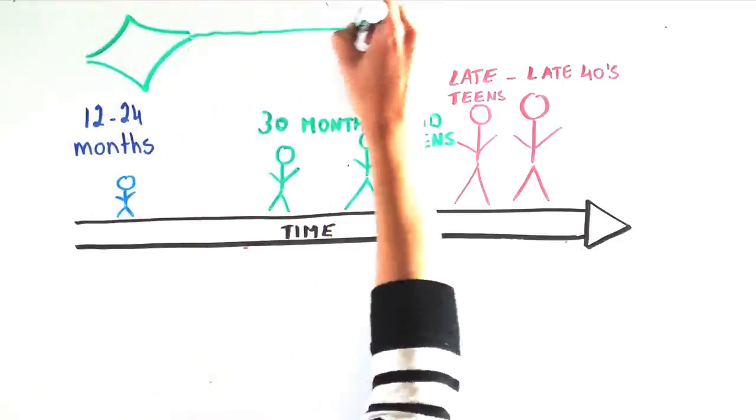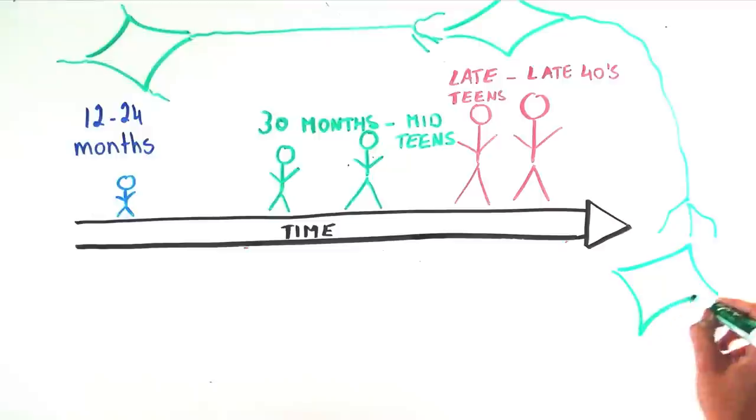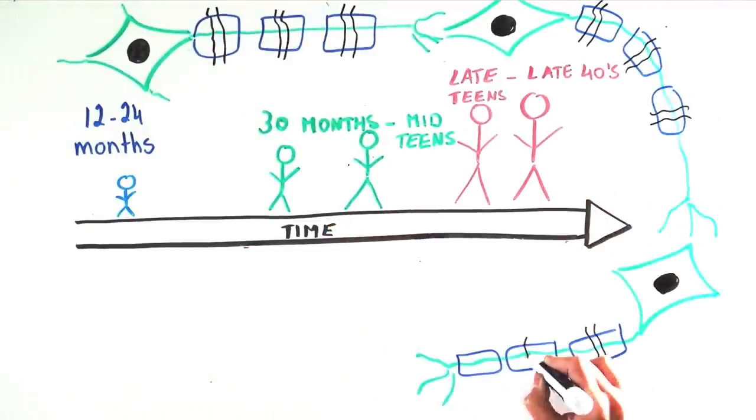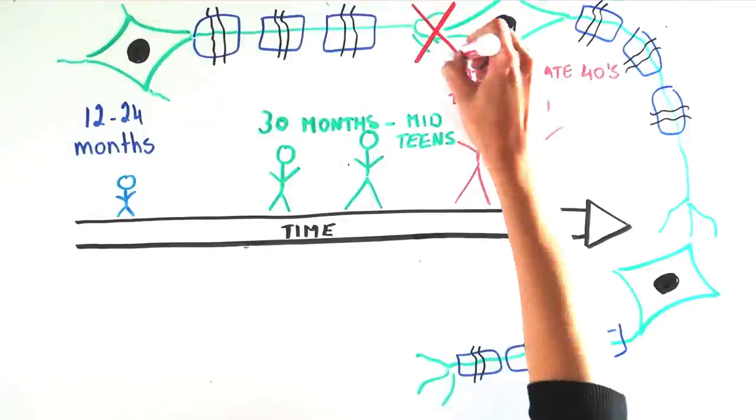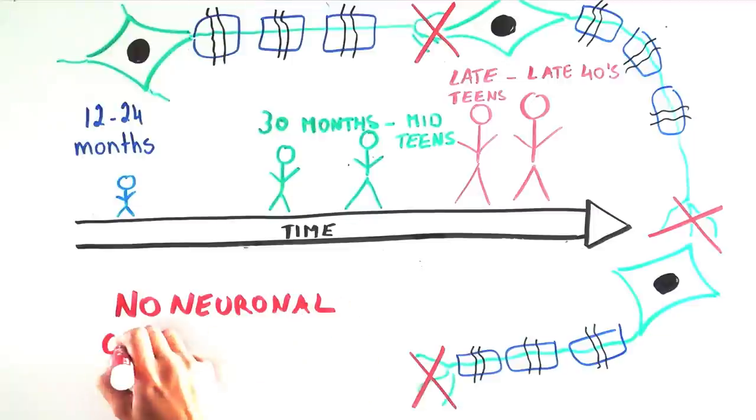Interestingly, even though these different types of MLD have very different symptoms and times of onset, the underlying biology is the same. Degradation of the myelin covering around nerves occurs, the nerves can no longer communicate with each other, and symptoms of MLD result.